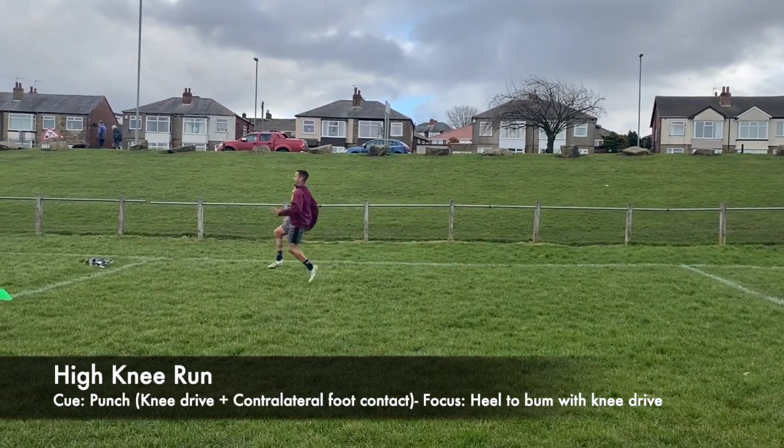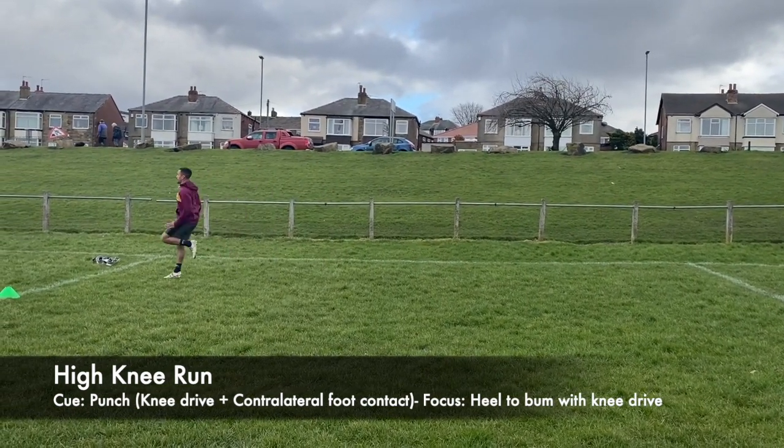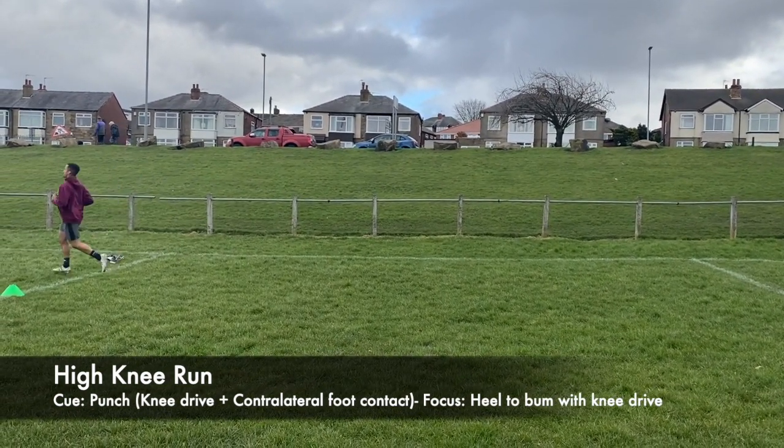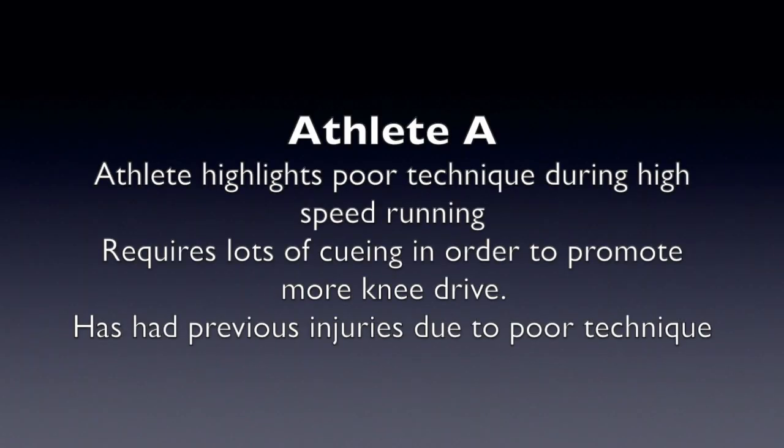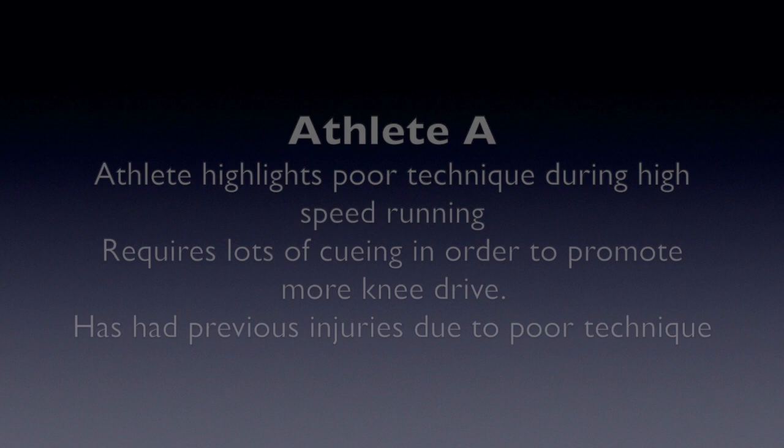This is already too demanding for Athlete A as you can see he flares his ribs. Athlete A clearly has poor technique during high speed running and requires a lot of cueing to encourage knee drive. As a result, Athlete A has already had numerous soft tissue injuries.